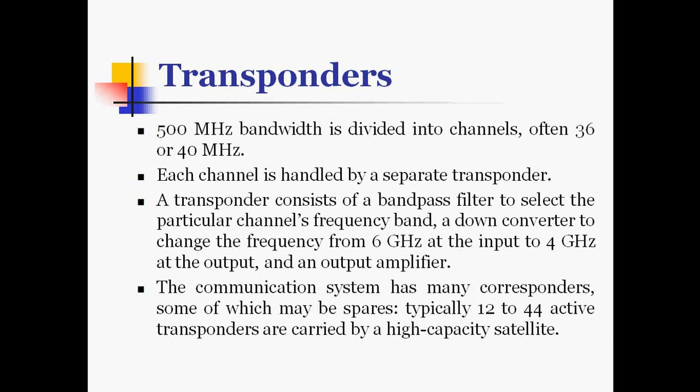A down converter changes the frequency from 6 GHz at the input to 4 GHz at the output, along with an output amplifier. The communication system has many transponders, some of which may be spares. Typically 12 to 44 active transponders are carried by a high capacity satellite.